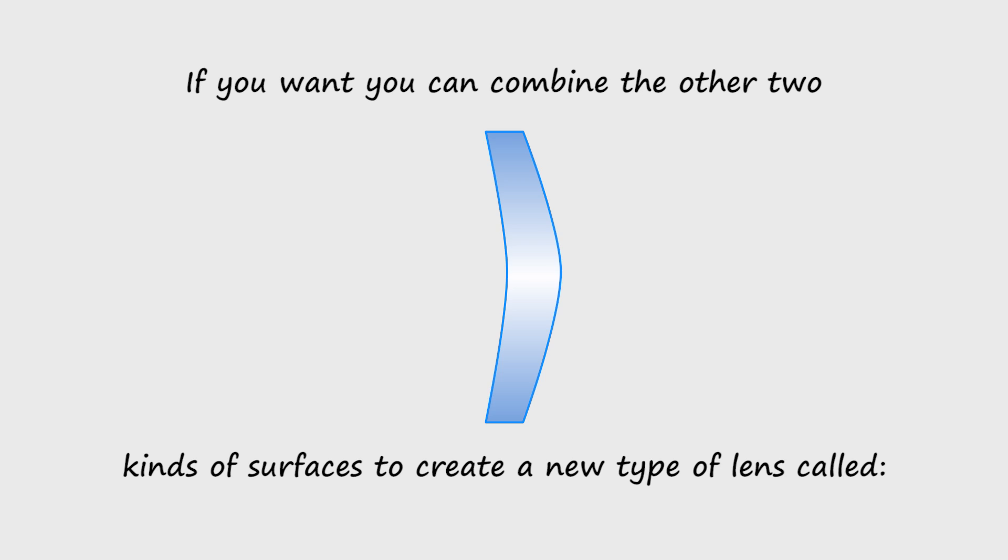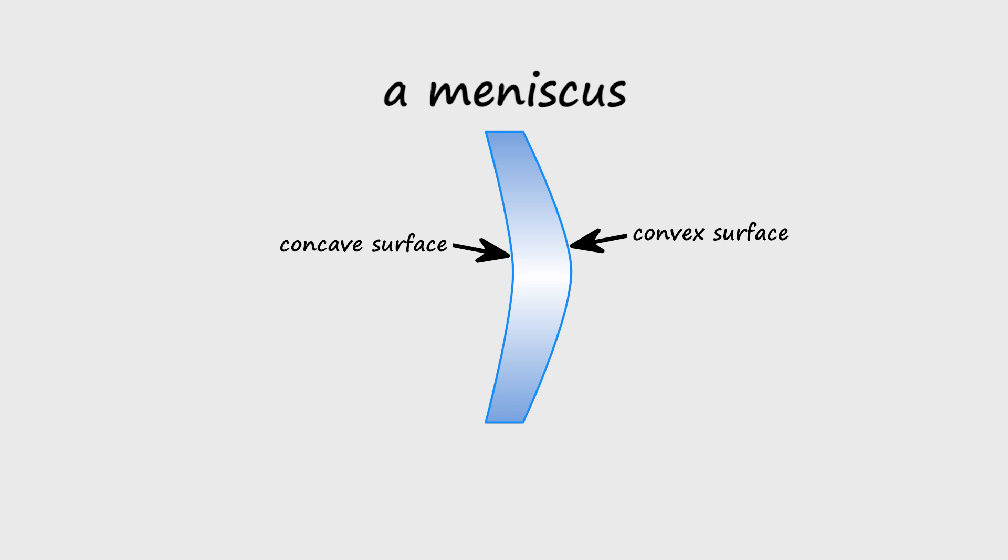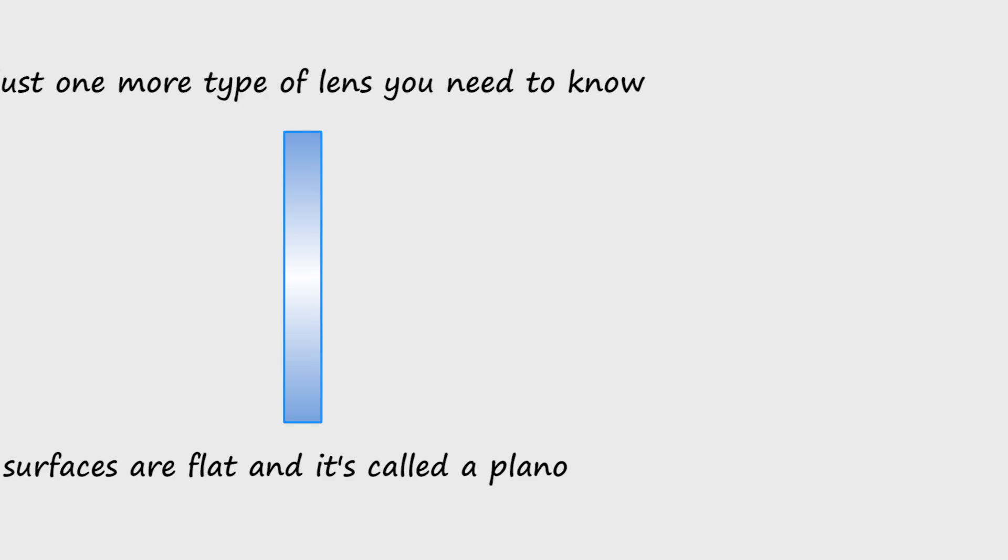If you want, you can combine the other two kinds of surfaces to create a new type of lens called a meniscus.